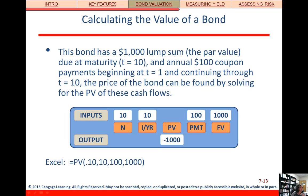In the financial calculator we can check all of this by putting in the yield to maturity as 10, interest rate as 10, payment as positive 100 because that's going to be an inflow to us, and then future value or face value as positive 1,000. Compute present value and we'll get negative 1,000.